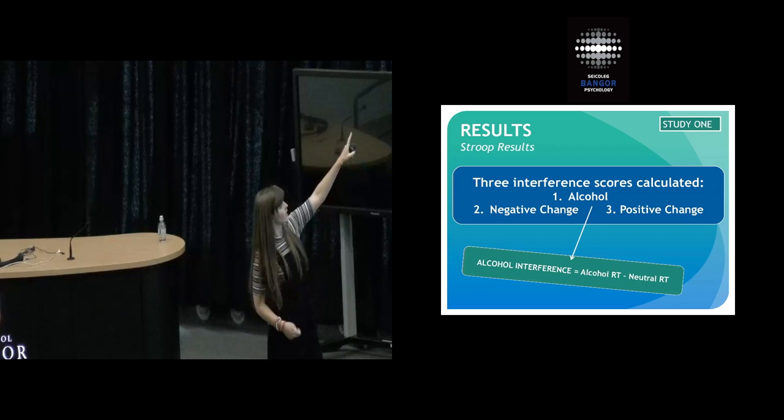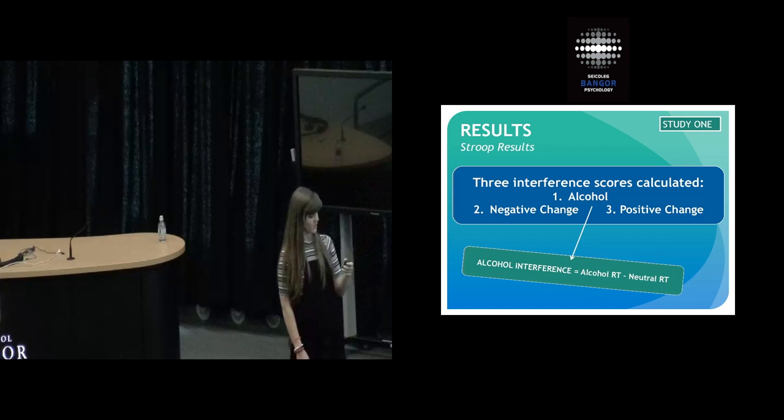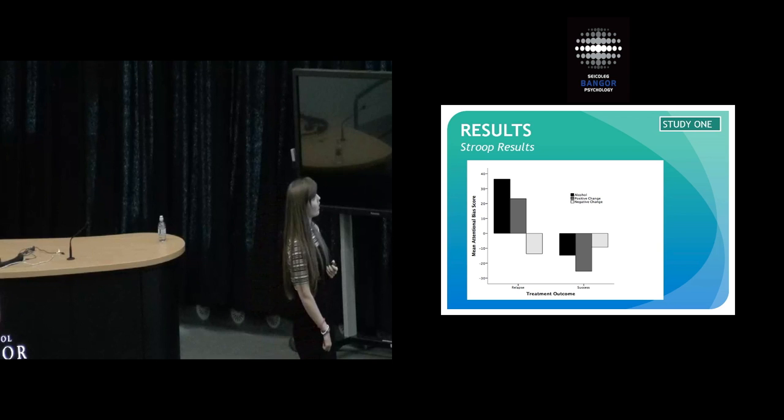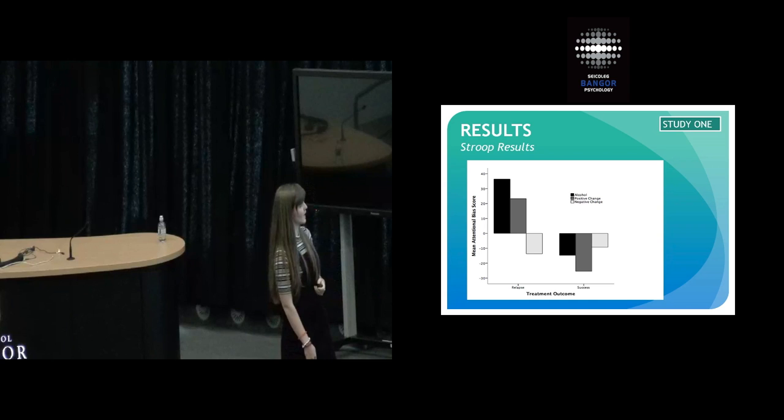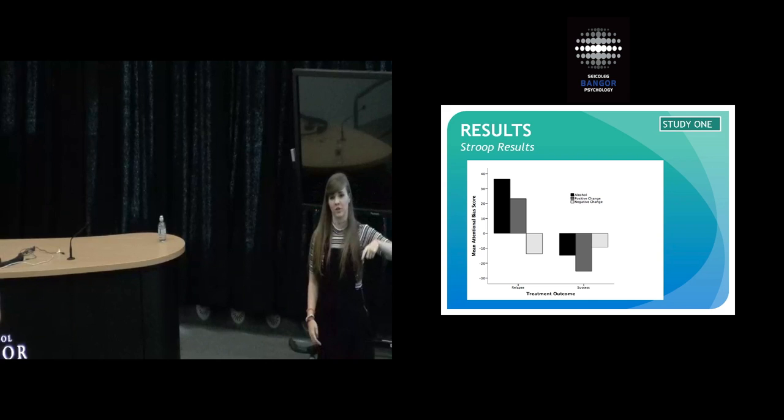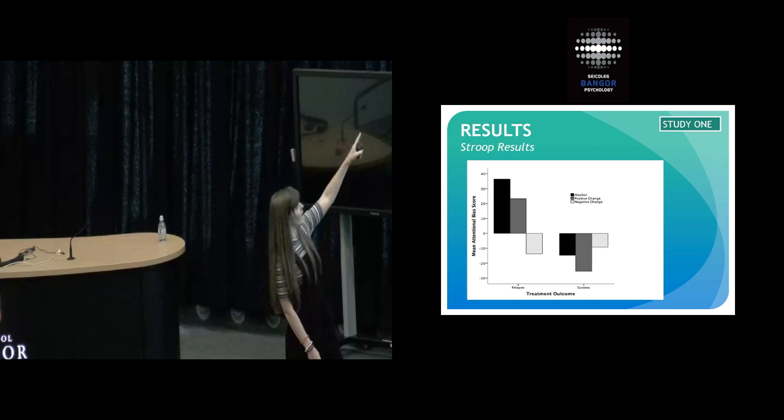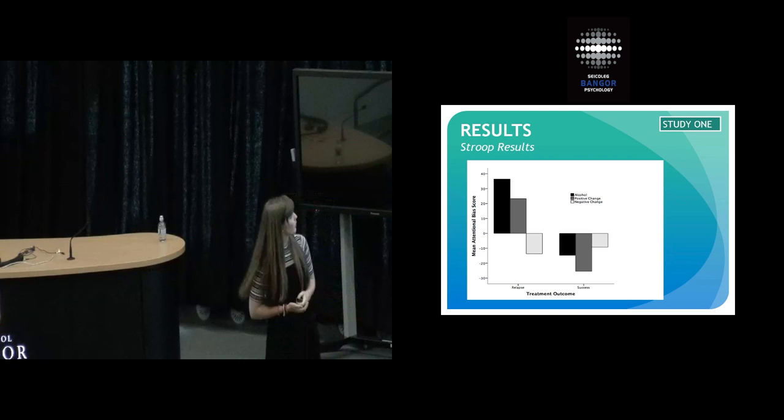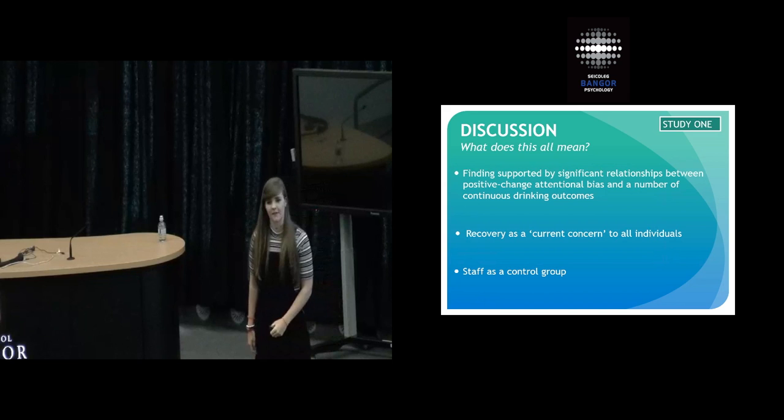Just as a reminder for the Stroop results, Stroop results are interference scores calculated by taking away each person's neutral reaction times from the alcohol, negative change, or positive change scores. We found that individuals who relapsed had a greater alcohol attentional bias and, interestingly, a greater positive change attentional bias than those who were successful, which wasn't particularly what we expected. The negative change scores were not significantly different from each other. We ran a logistic regression model including alcohol change and positive change words, and this overall model was significant, but the significant predictor was the positive change scores.